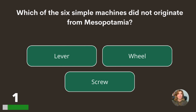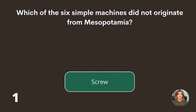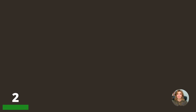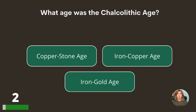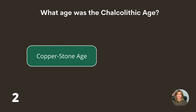Which of the six simple machines did not originate from Mesopotamia — the lever, the wheel, or the screw? The screw. What age was the Chalcolithic age — copper stone age, iron copper age, or iron gold age? The copper stone age.